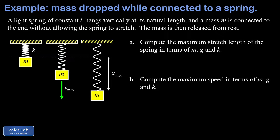In this video we're solving a problem where we have a mass attached to a spring hanging vertically. The spring is initially at its relaxed length, then we release the system from rest. The mass falls downward, causing the spring to stretch until we reach a maximum stretch length — a turning point — after which the mass springs back upward. The problem has two parts: finding the maximum stretch length and finding the maximum speed of the mass on its way down.